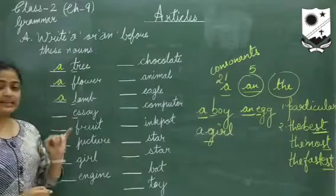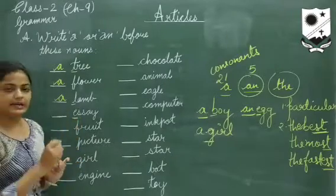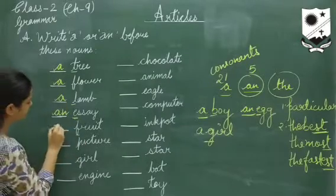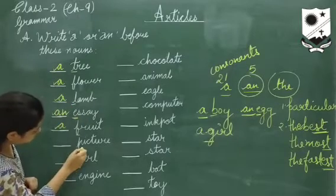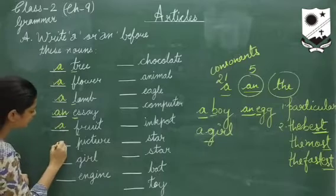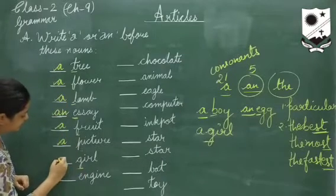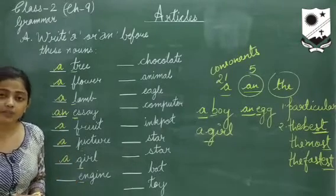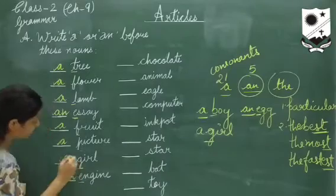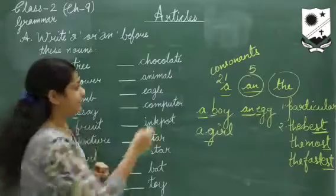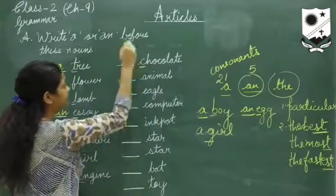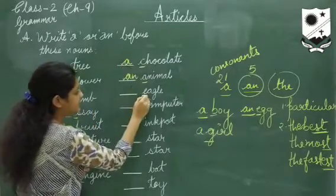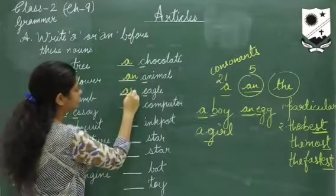Essay — it begins with the vowel e, so we write 'an essay'. Fruit — again a consonant, so write 'a'. Picture — begins with a consonant sound, so write 'a picture'. Girl — consonant again, so 'a girl'. Engine — begins with a vowel sound, so write 'an engine'. Chocolate — begins with a consonant, so 'a chocolate'. Animal — A is a vowel, so 'an animal'. Eagle — again a vowel, so write 'an eagle'.